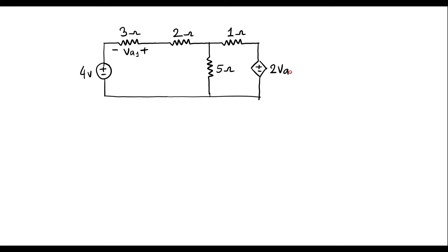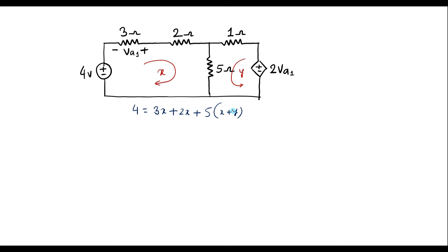I will call the voltage across the 3 ohm resistor as VA1. Let me solve this using loop analysis. Let current through loop one be X and current through loop two be Y. Applying KVL to loop X: 4 equals 3X plus 2X plus 5 times (X plus Y), which simplifies to 10X plus 5Y. Let this be equation 1.